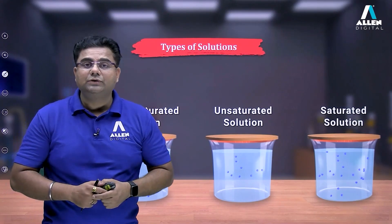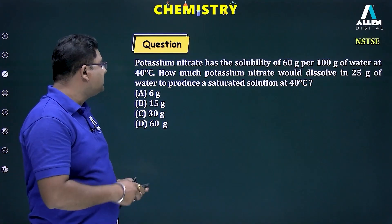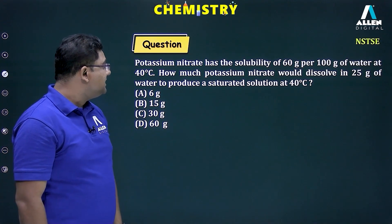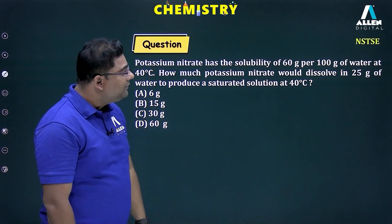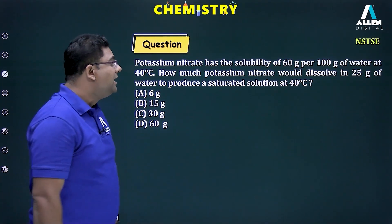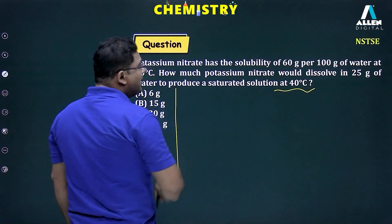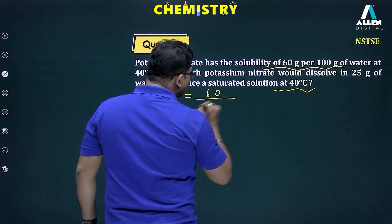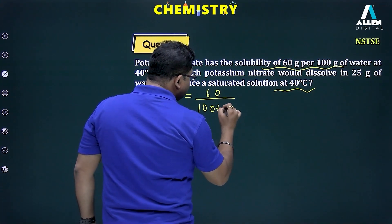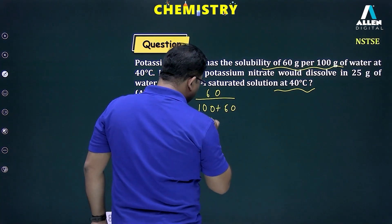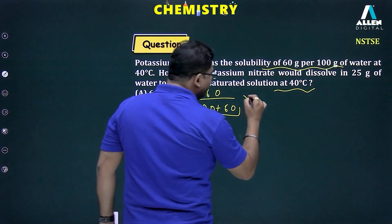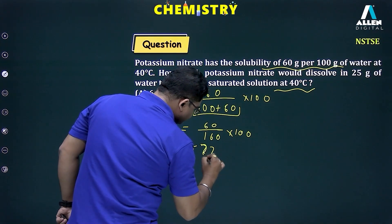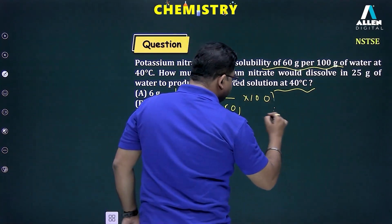These are the three types of solutions to remember. Question 1: Potassium nitrate has a solubility of 60 grams per 100 grams of water at 40 degrees Celsius. How much potassium nitrate would dissolve in 25 grams of water to produce a saturated solution at 40 degrees Celsius? We calculate the concentration: mass of solute divided by mass of solution, into 100 — that is 60/160 × 100 = 37.5 percent.